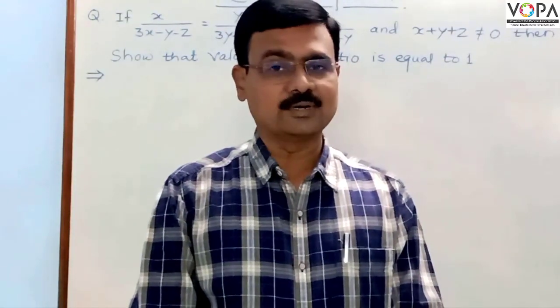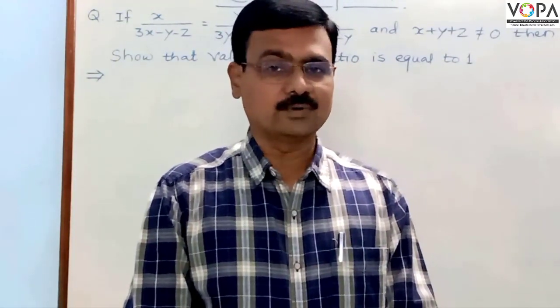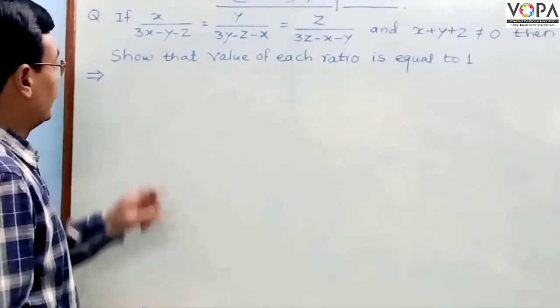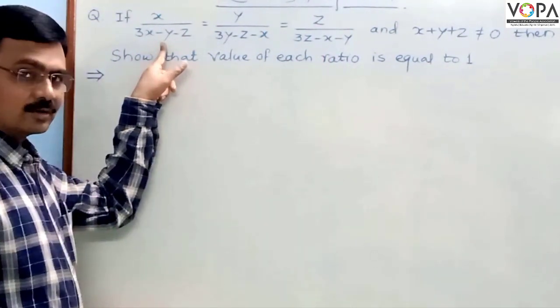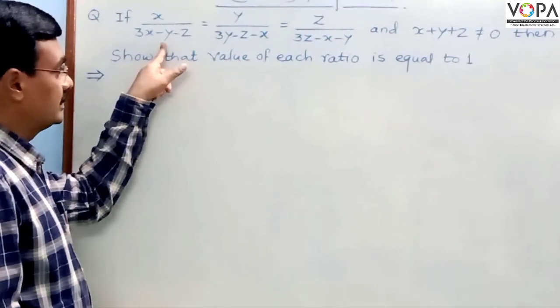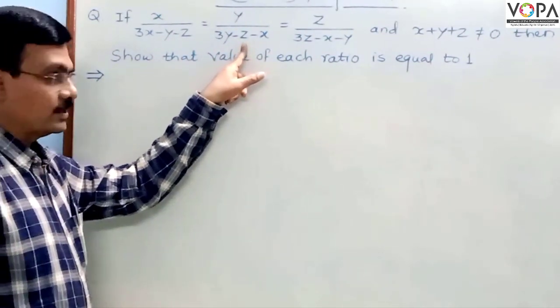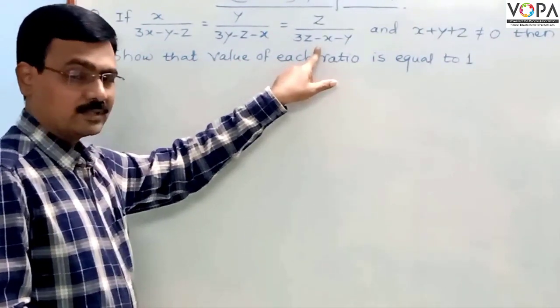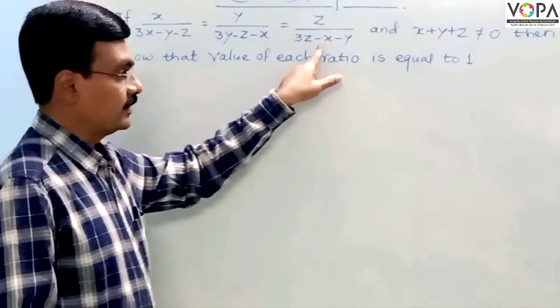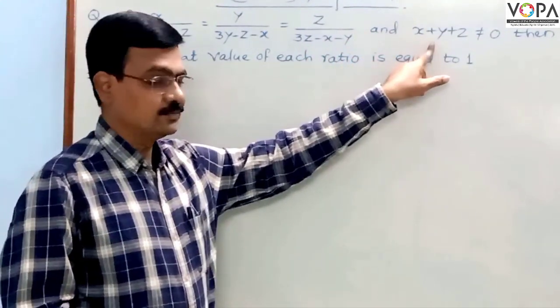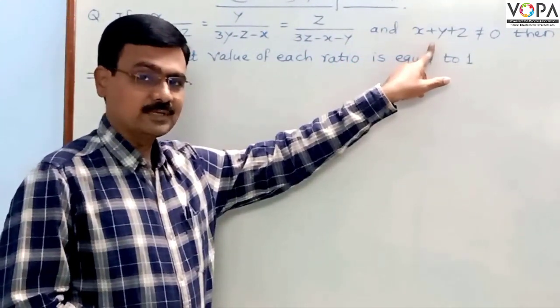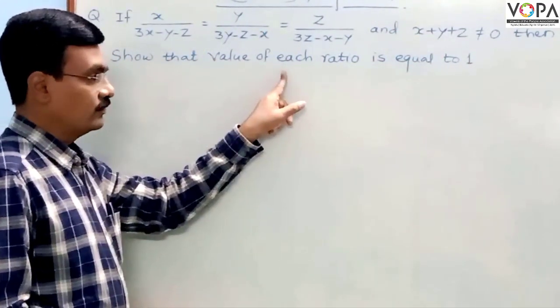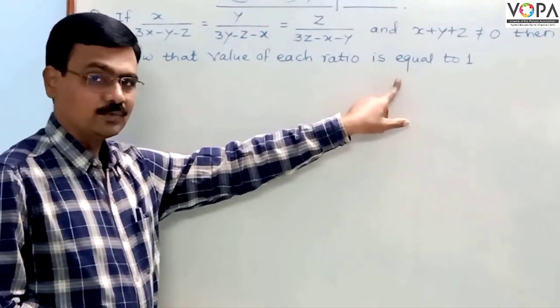Let us solve an example which is based on the theorem of equal ratios. In the question, it is given that x upon (2x minus y minus z) is equal to y upon (2y minus z minus x) is equal to z upon (2z minus x minus y), and the condition is that x plus y plus z not equals to 0. Then show that the value of each ratio is equal to 1.